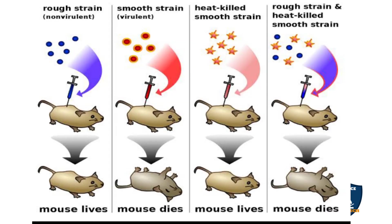In the Griffith experiment, he took the rough strain, which is the R type — non-virulent, meaning it is not a killer — and injected it into a rat.